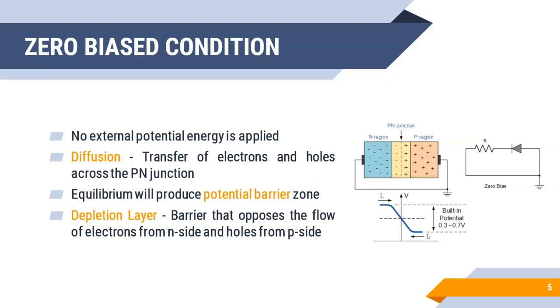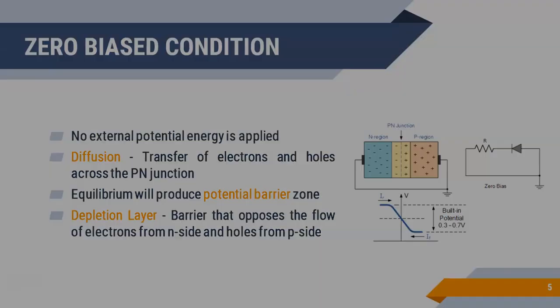In that zone, the width of the depletion region is fixed and it will act as a barrier for further movement of electrons and holes. That's why we are calling it potential barrier. Normally, silicon will have a potential barrier of 0.7 volts and germanium will have 0.3 volts.